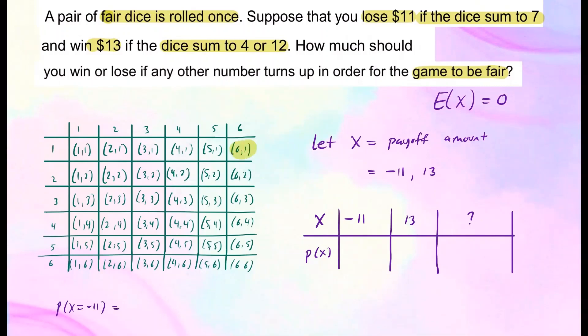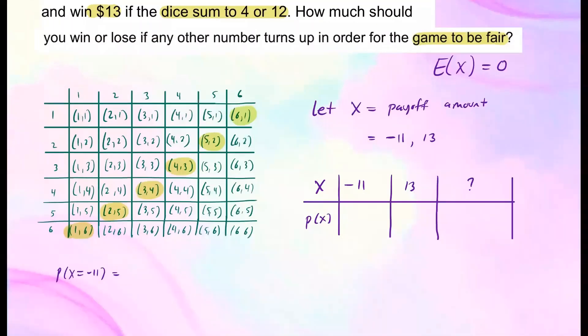So we see how many outcomes gives us sum to be seven. So this will give you sum to be seven, this as well, so as this, so along this diagonal. These are the six outcomes you have when the sum is seven. So the probability that you're going to lose $11 is going to be six out of 36.